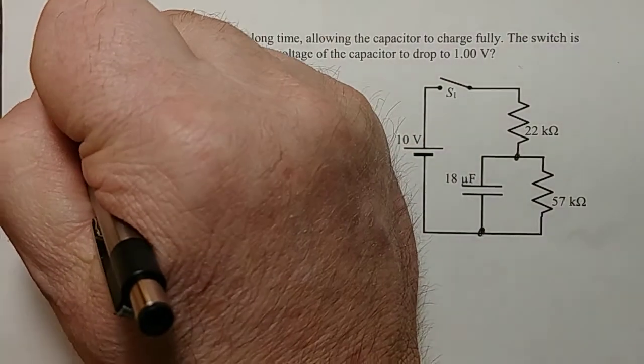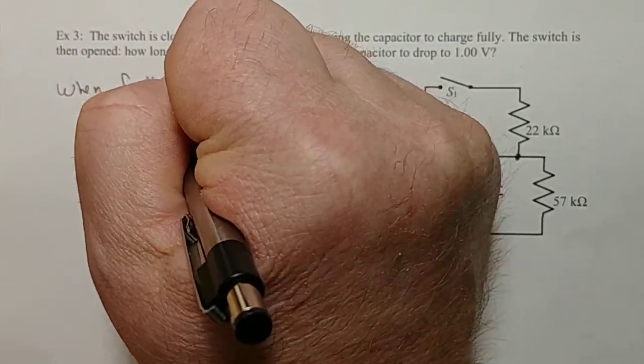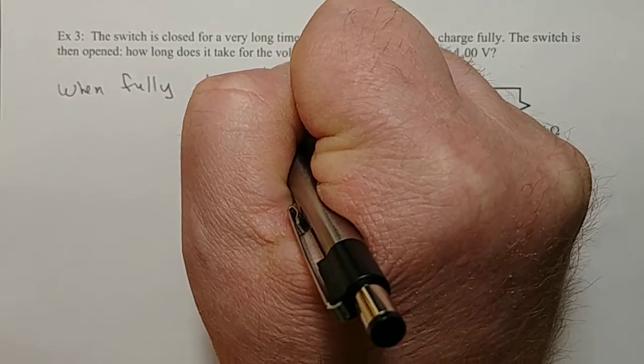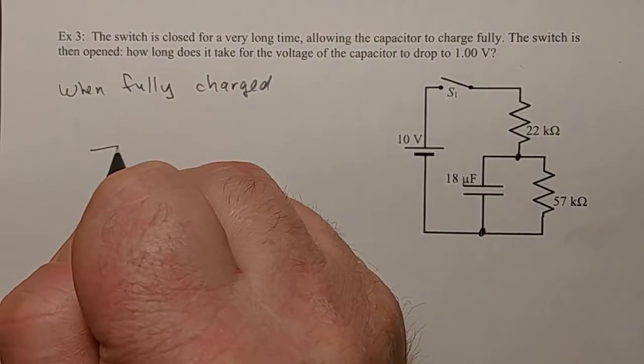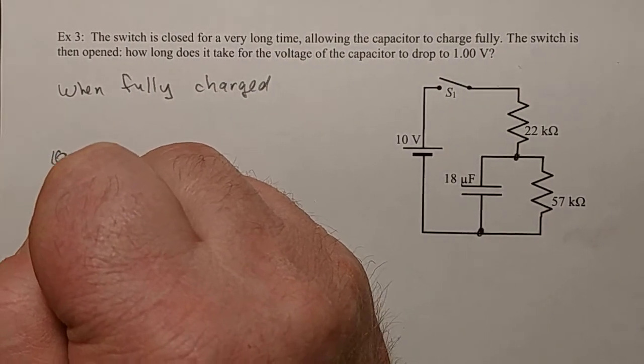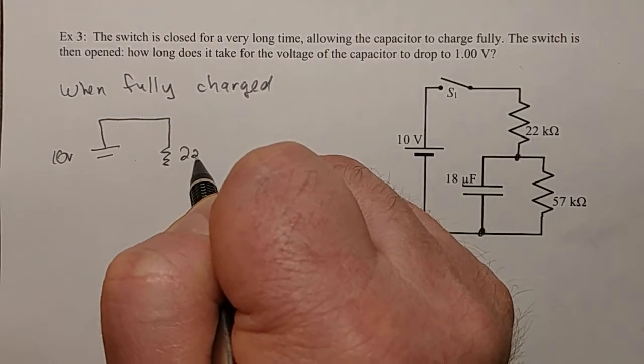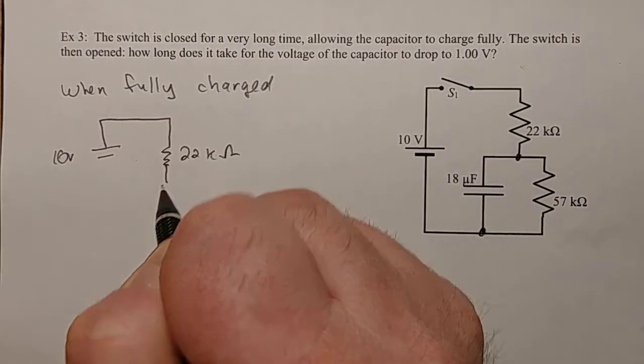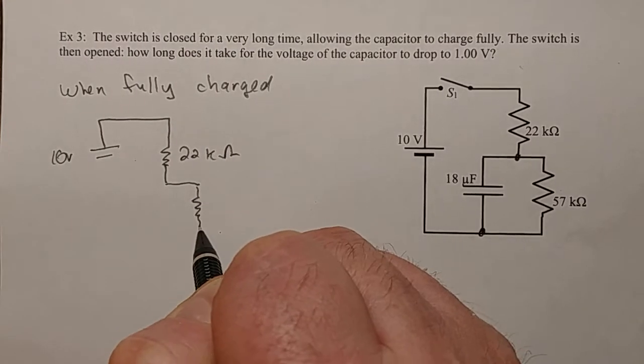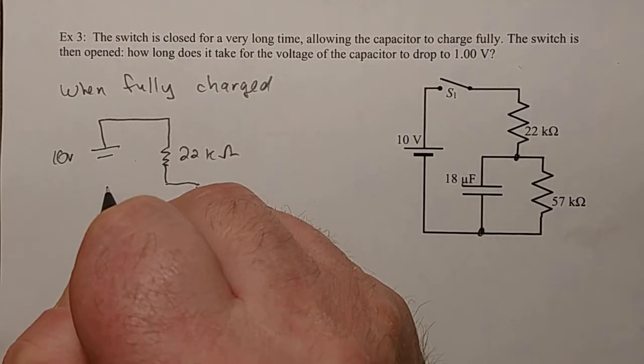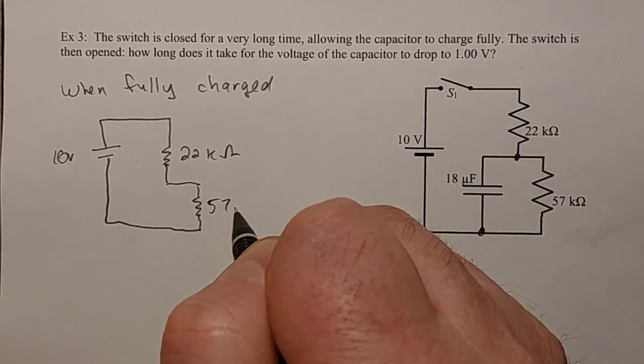So when fully charged, here's what the current looks like. The current flows from the 10 volt battery, then it goes across here with 22 kilo ohms, goes down through here, then back up here through 57 kilo ohms.